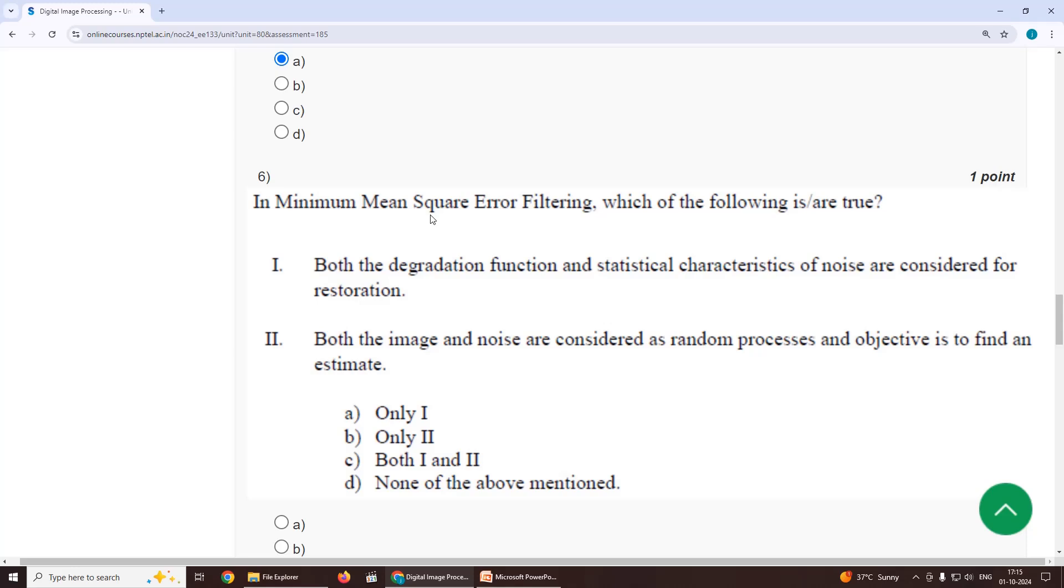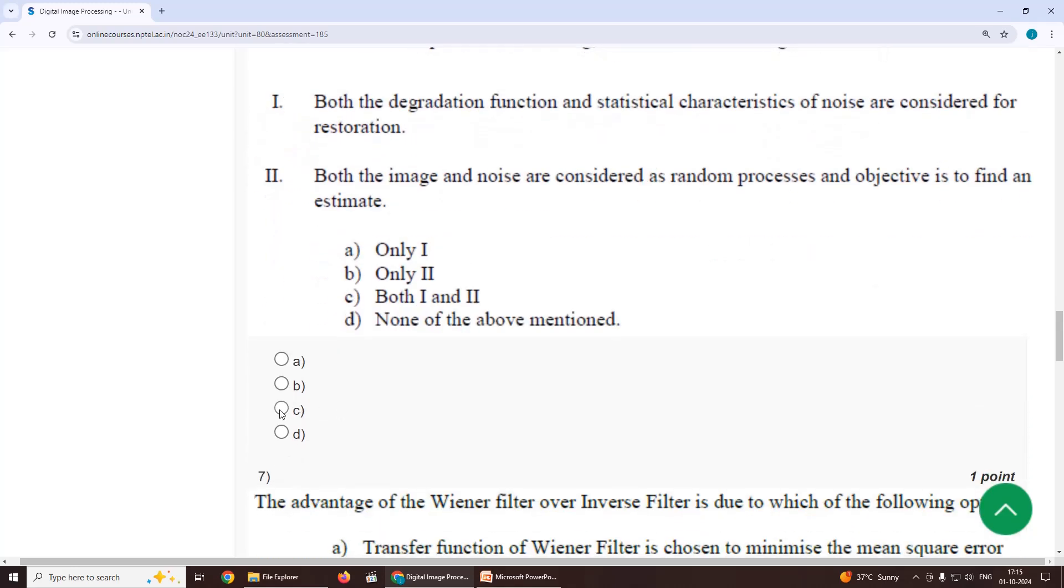Sixth one, in minimum mean square error filtering, which of the following are true? Our option is C, both one and two. Both the degradation function and statistical characteristics of noise are considered for restoration. Second one, both the image and noise are considered as random processes and objective is to find an estimate.